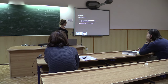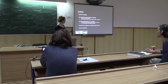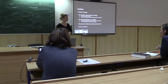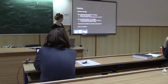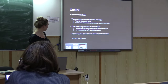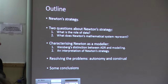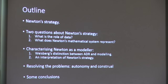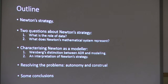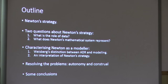Here's what we're going to do: I'll give you a brief rundown on what Newton's theorizing strategy looks like, then I'll raise these two questions about Newton's strategy, and then I'll basically characterize Newton as a modeler using Michael Weisberg's machinery — autonomy and construal — and show you how these can give us some answers to these questions. Then I'll draw some conclusions and also some lessons.